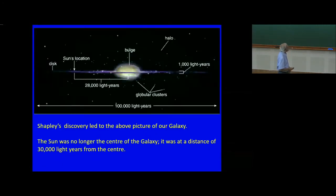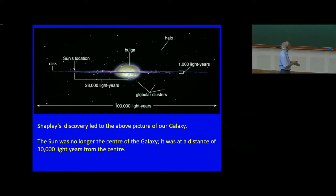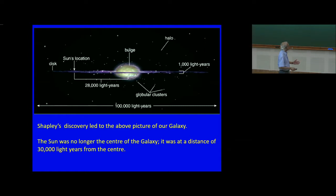So the model of the galaxy that was soon accepted is shown in this cartoon. The galaxy has a flat disk. In the center there is a bulge. We — the solar system — are about 30,000 light years from the dynamical center of the galaxy. The physical size of our galaxy is a lot larger than Kapteyn imagined: it's about 100,000 light years across.